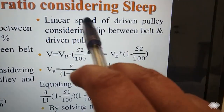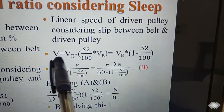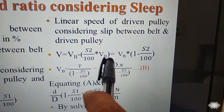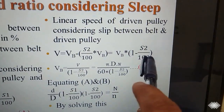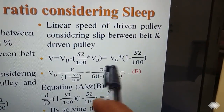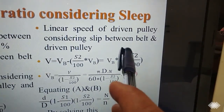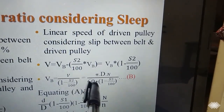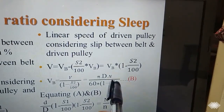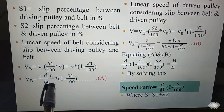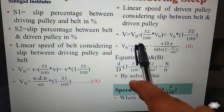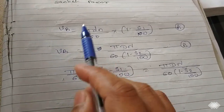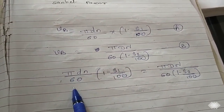Similarly, the linear speed of the driven pulley considering slip equals vb minus (s2/100)·vb, giving vb·(1 − s2/100). So vb equals V divided by (1 − s2/100), where V equals pi·D·N/60. This gives two expressions for vb: equation (a) from the driving side and equation (b) from the driven side. Let's equate equations (a) and (b).